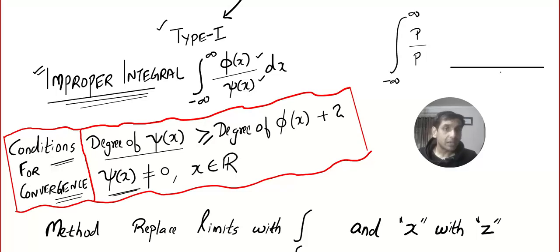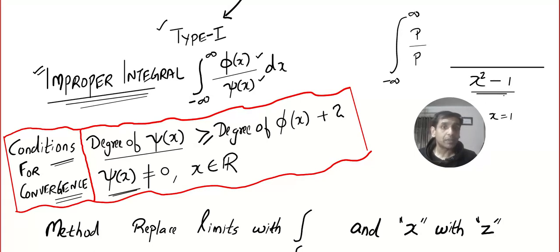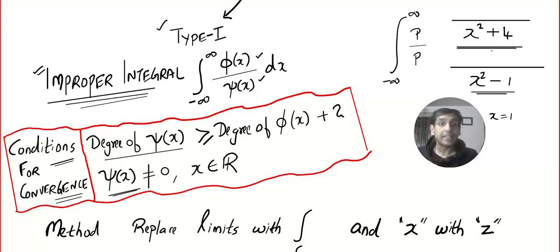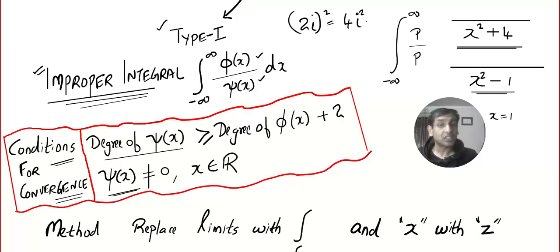The denominator should never ever vanish by plugging in any real number. For example, if the denominator is x² minus 1, plugging in x = 1 makes the denominator 0 — that's not allowed. But if the denominator is x² + 4, you can never make it 0 by plugging in a real number. If you plug in 2i, you get (2i)² = 4i² = −4, so it equals −4, not zero.